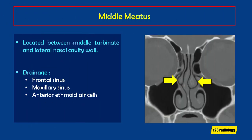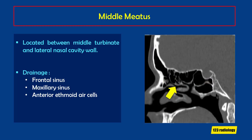The middle meatus is found between the middle turbinate and lateral nasal cavity wall, as you can easily see on coronal images. It receives drainage from the maxillary sinus, the frontal sinus, and the anterior ethmoid air cells. On sagittal images, you can find it by localizing the ethmoid bulla, as it sits underneath that.